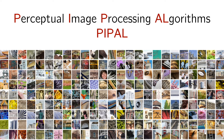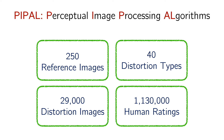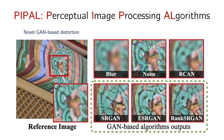To answer these questions, we build a large-scale IQA dataset called PIPAL, perceptual image processing algorithms. PIPAL contains 250 reference images, 40 distortion types, 29,000 distortion images, and more than 1 million human ratings. Especially, we include outputs of GAN-based algorithms as a novel GAN distortion type. As shown in the figure, unlike the traditional distortions in the upper row, which do not follow the natural image distribution, the GAN-based outputs are actually similar to natural images; however, their details are wrong.